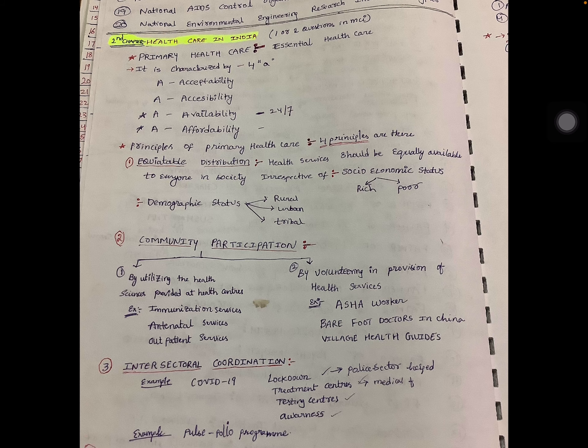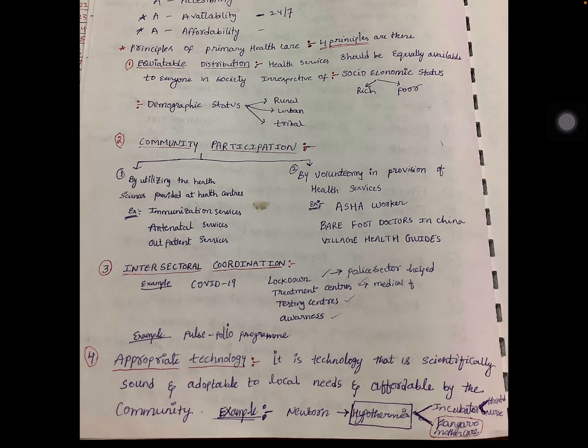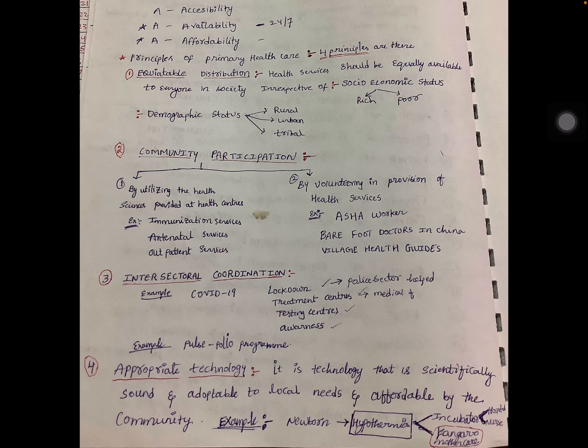Regarding community participation, there are two types. First, by utilizing health services provided at health centers — for example, immunization services, antenatal services, and outpatient services. Second, by volunteering in the provision of health services — for example, ASHA workers, barefoot doctors in China, and village health guides.